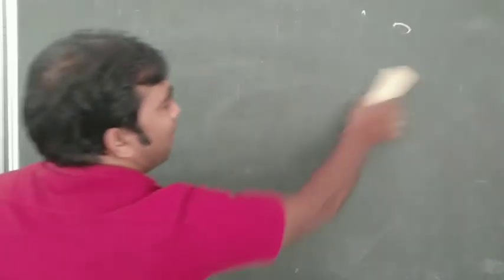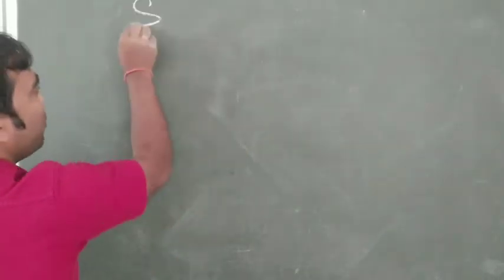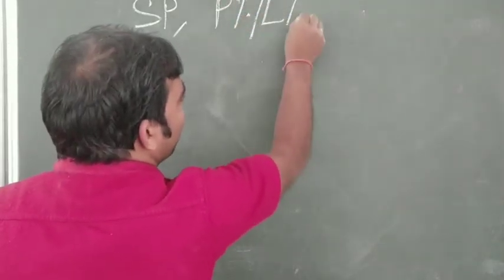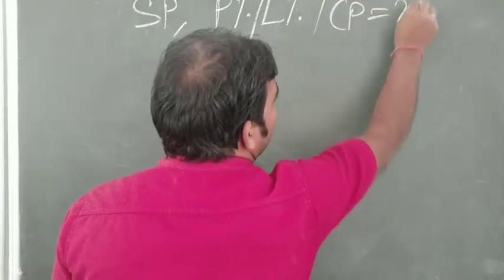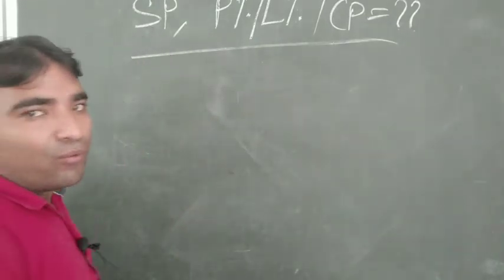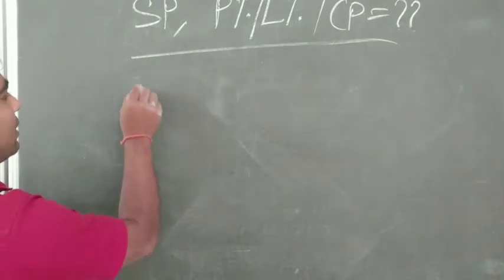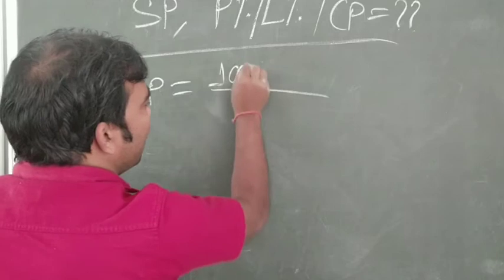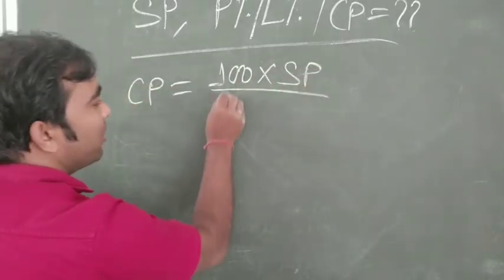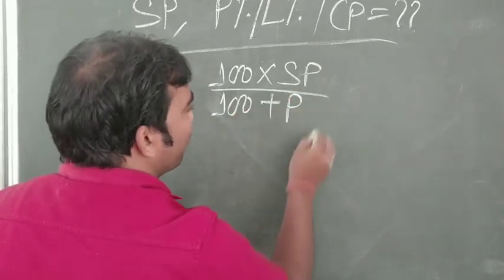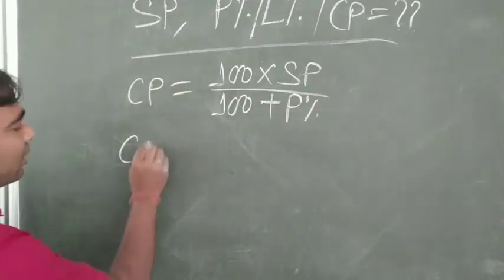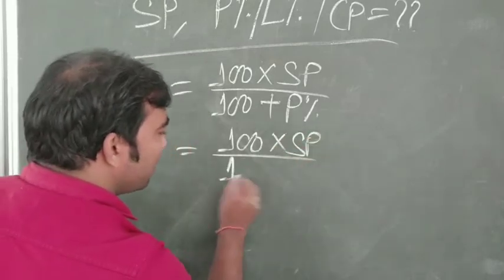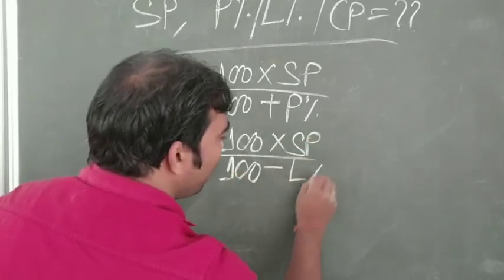If we know SP and we know profit percentage or loss percentage, and we need to find out CP, we use the formula: CP equals 100 into SP divided by 100 plus profit percentage. Similarly, in case of loss: CP equals 100 into SP divided by 100 minus loss percentage.